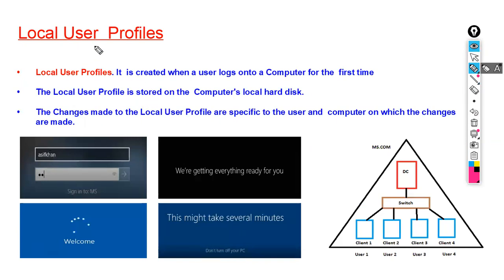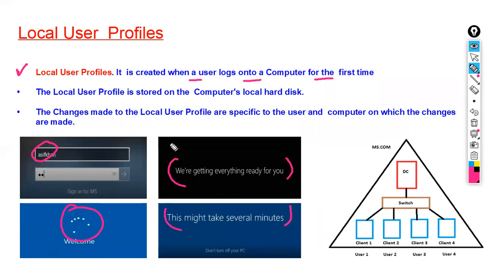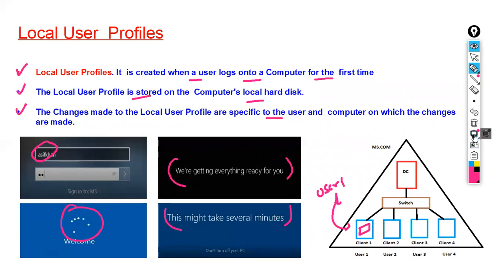A local user profile is created when a user logs on to a computer for the first time. You will see messages indicating the profile is being created. The local user profile is stored on the computer's local hard disk. Changes made to this local user profile are specific to the user and the computer on which the changes are made.